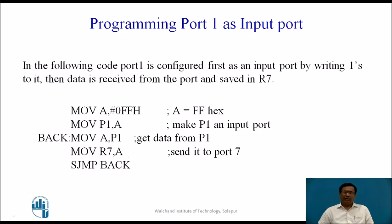Programming Port 1 as an input port: similar to Port 0, we first configure it as an input port by writing 1s to it, then use it as input. Here, data is received from the port and saved in R7. The two configuration instructions write FFh to Port 1. Then 'MOV A, P1' reads Port 1 contents into the accumulator, and 'MOV R7, A' stores them in R7 — Port contents are sent to R7 continuously.